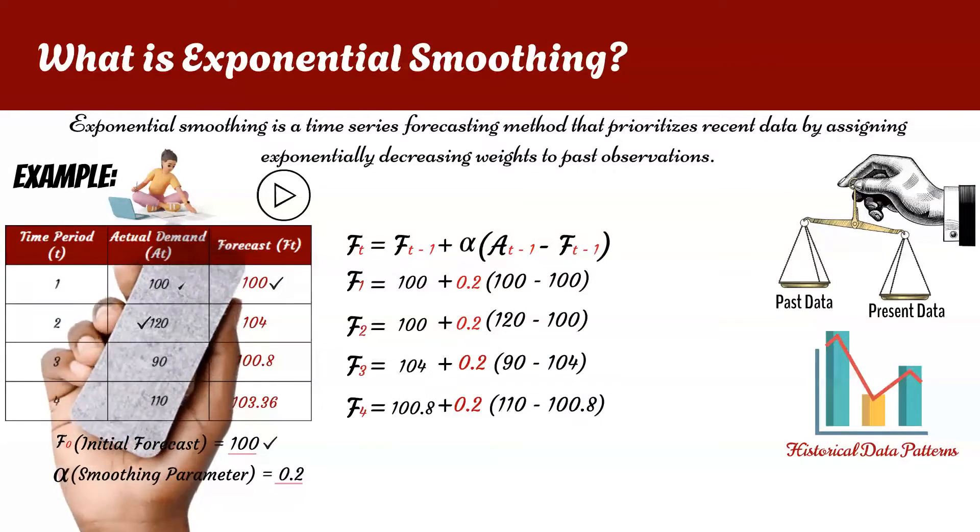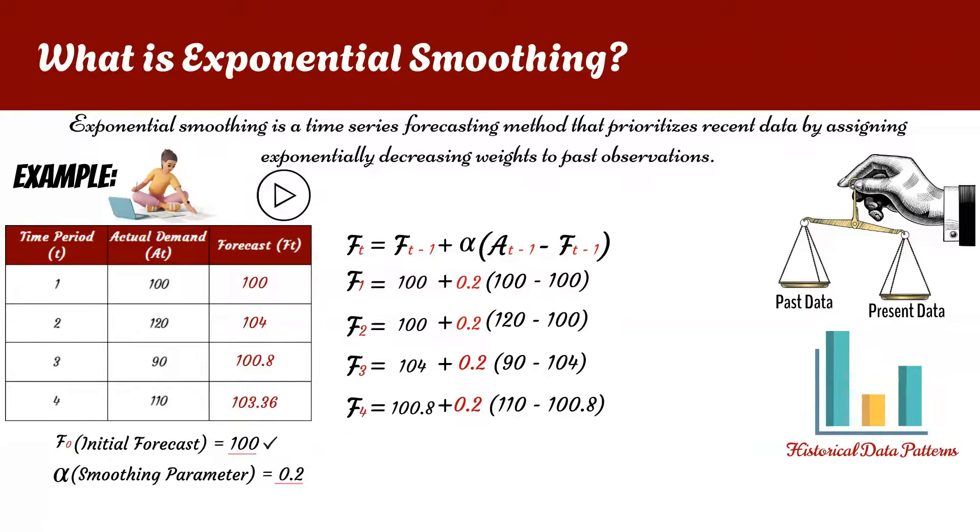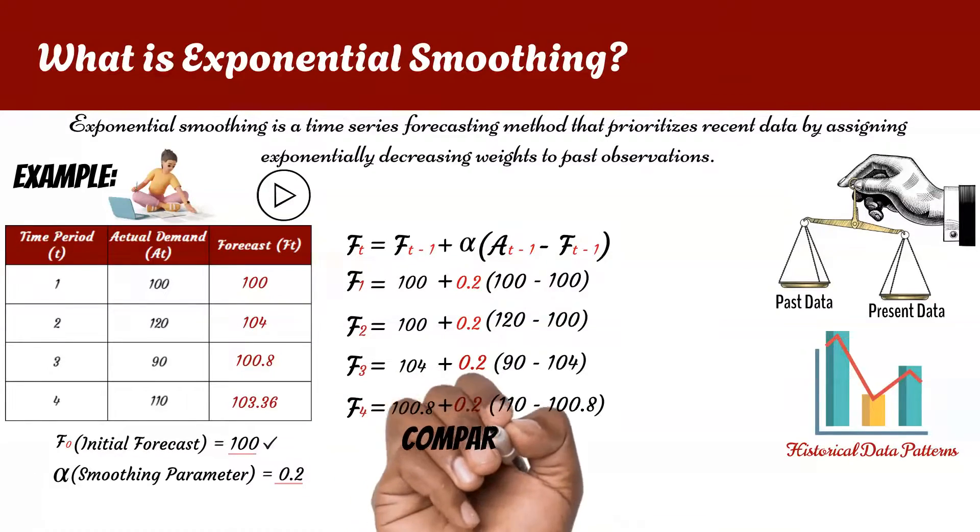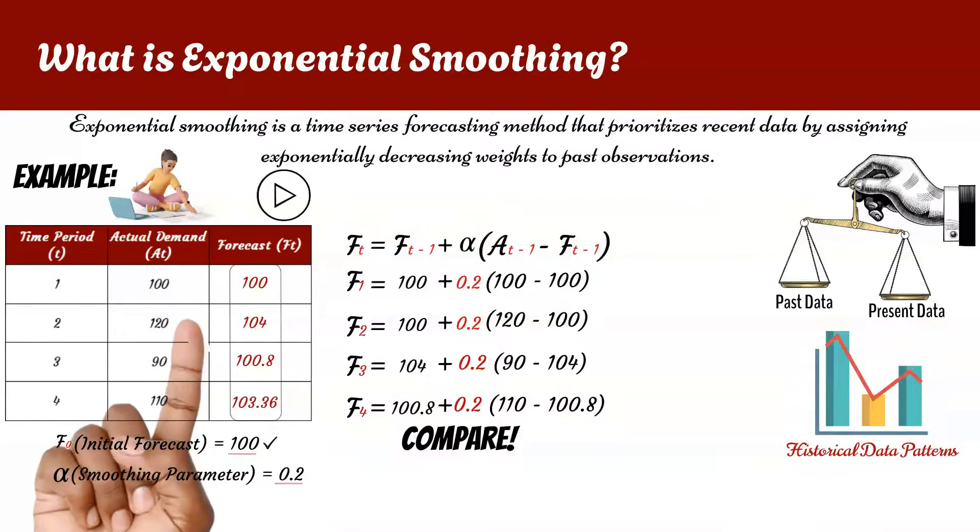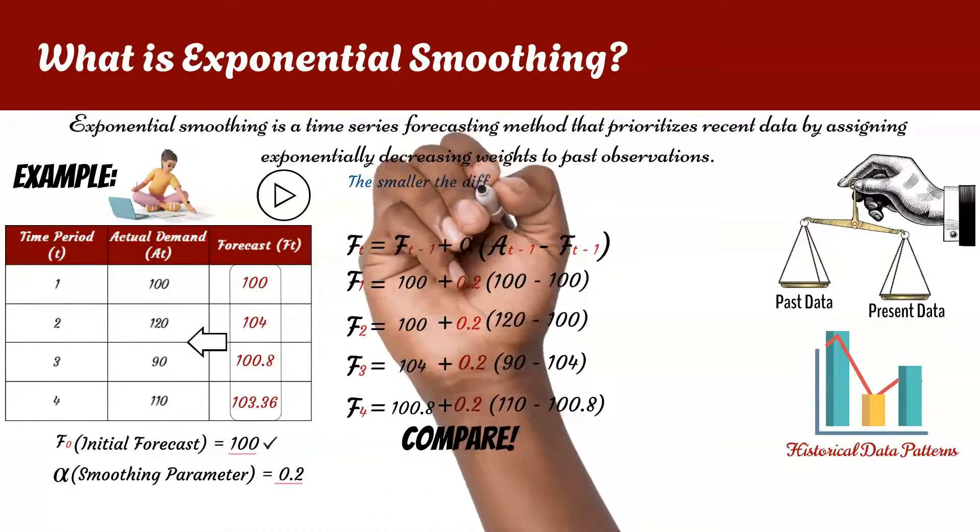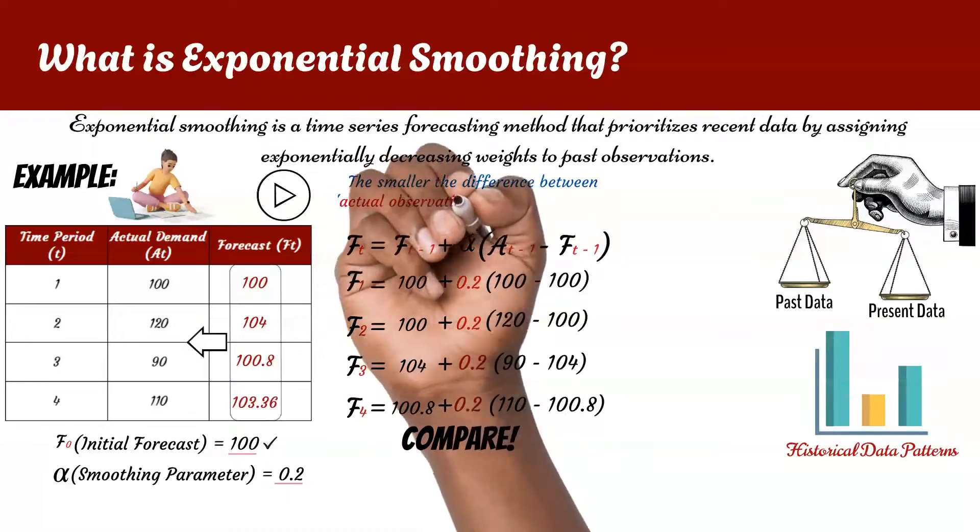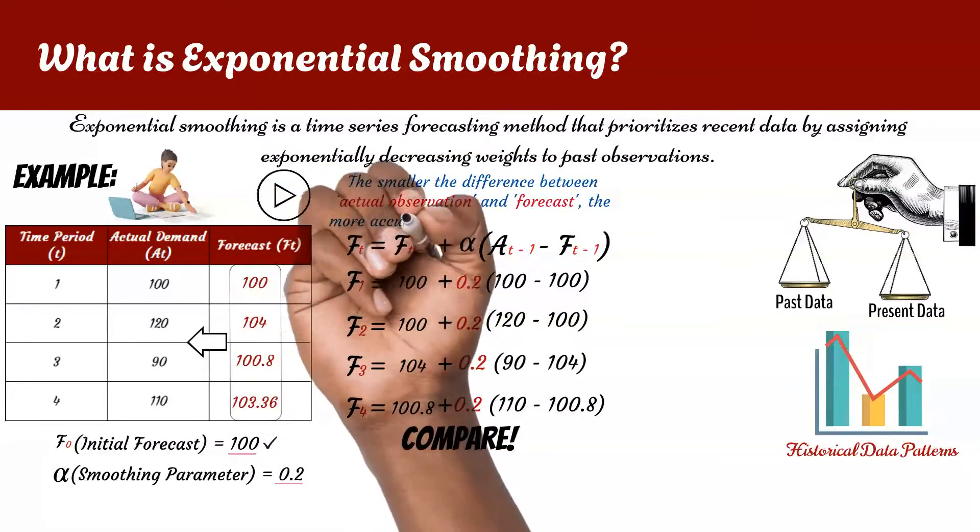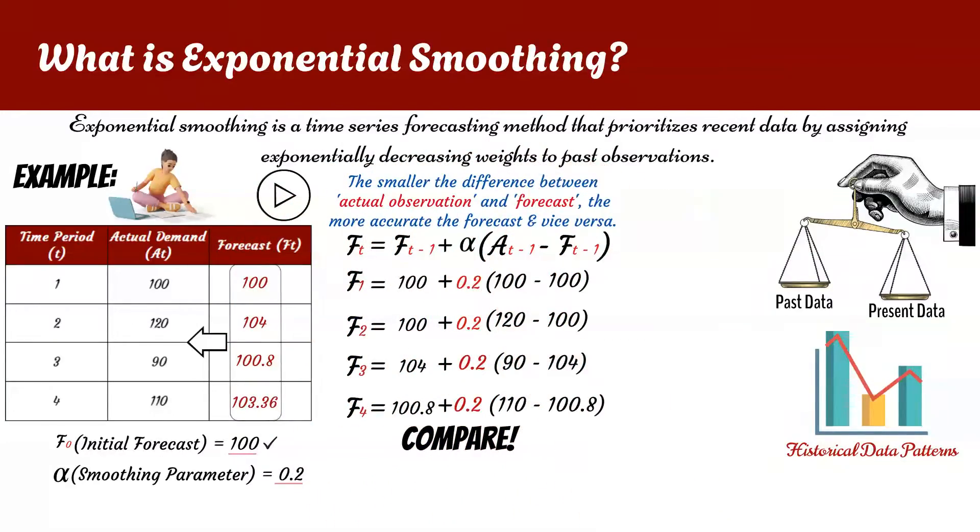So, what have we learned from this simple example in using exponential smoothing to forecast demand? First, we need to compare the actual observations or demand to the forecasted demand. When comparing the forecasted values with the actual values, you want to assess the accuracy of the forecasting model. A smaller difference between the forecast and the actual values indicates a more accurate prediction.